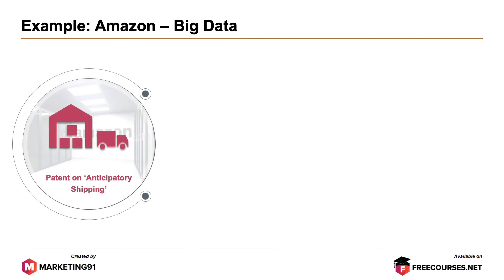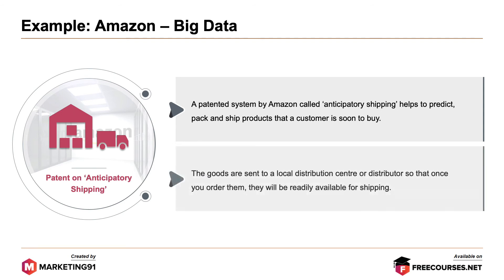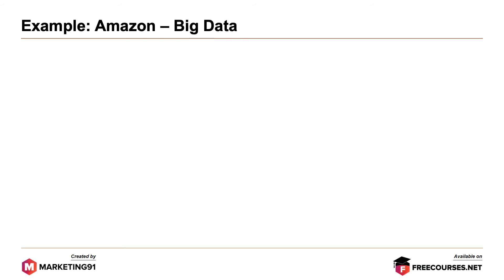Next, the patent on anticipatory shopping. A patented system by Amazon called Anticipatory Shipping helps to predict, pack and ship products that a customer is soon to buy. The goods are sent to a local distribution center or distributor, so that once you order them, they will be readily available for shipping.